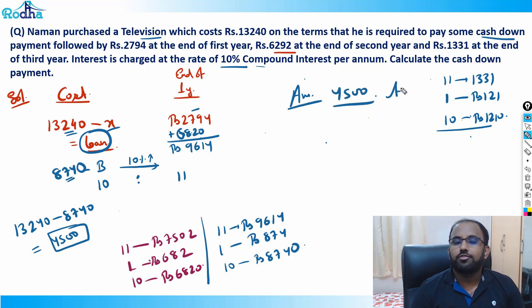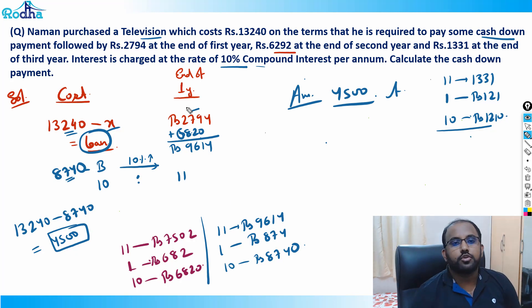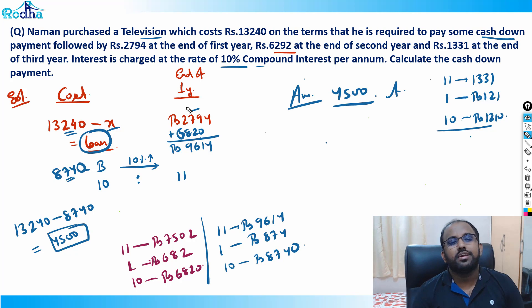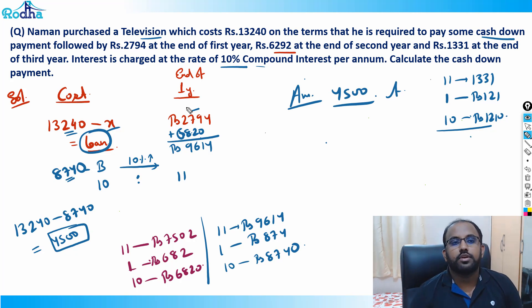The answer is ₹4500. This is a very good concept — you can solve installment questions with great ease when all values are given. Just use the ratio method and calculate everything in a chain.